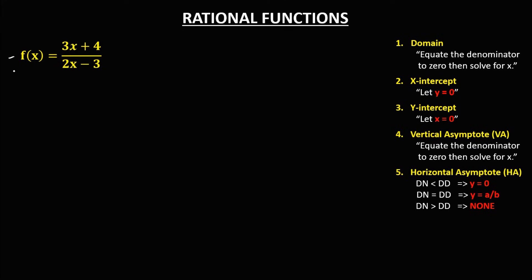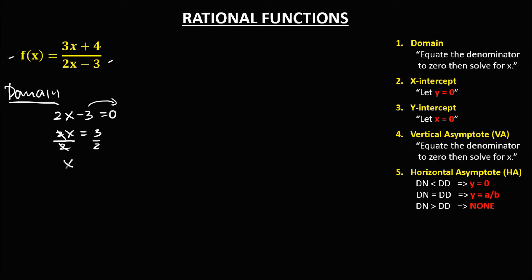For this second given, to find the domain, equate the denominator to 0. So 2x minus 3 equals 0. To solve for x, transpose, so 2x equals positive 3. Divide both sides by 2, so x equals 3 over 2. Therefore, the domain of this function is x element of real numbers such that x not equal to positive 3 over 2.